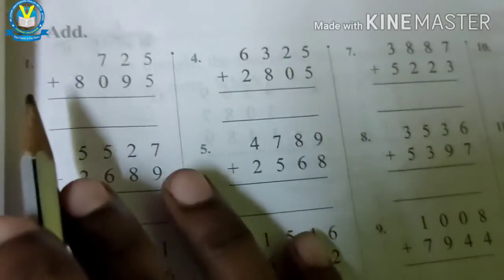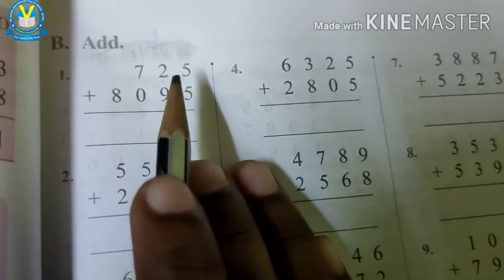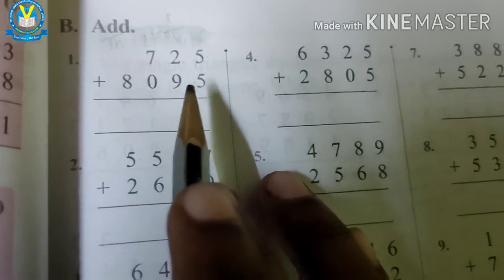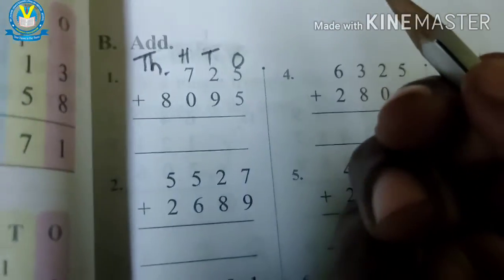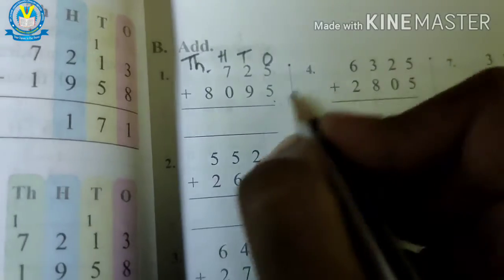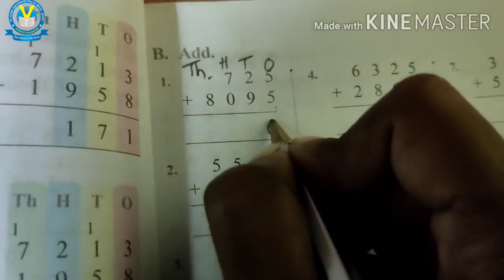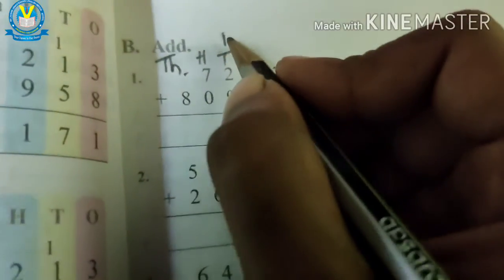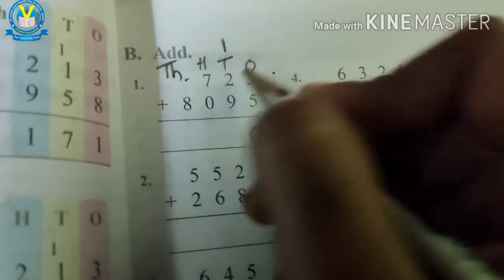Homework: add seven hundred twenty-five plus eight thousand ninety-five. First, write the place values: ones, tens, hundreds, thousands. First step — adding ones place values: five plus five equals ten, so write zero in the ones place and carry one over to the tens place. Next: one plus two equals three, then three plus nine equals twelve.